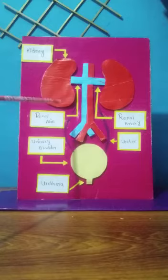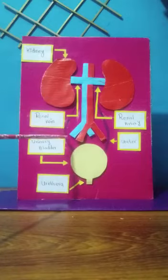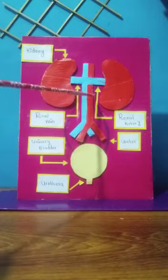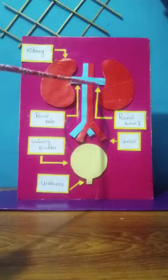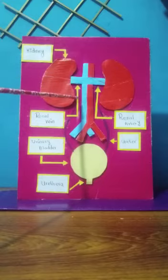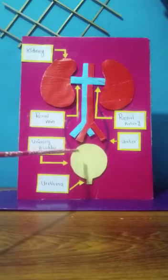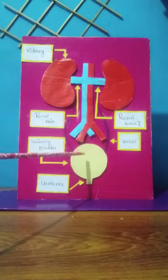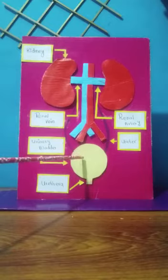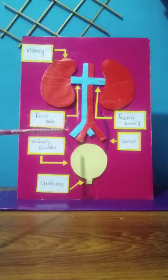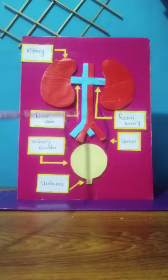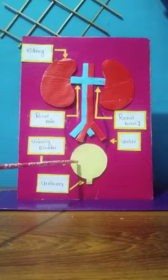Ureter is a narrow muscular tube that arises from the helix of each kidney. The ureter of each side then extends towards and opens into the urinary bladder. The ureter passes urine from the kidney to the urinary bladder.